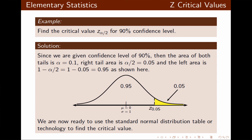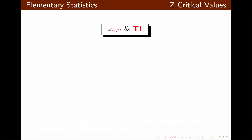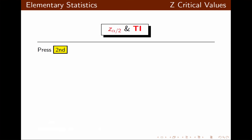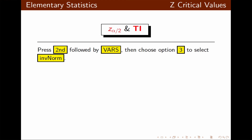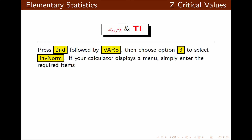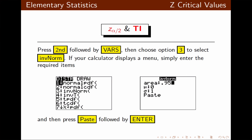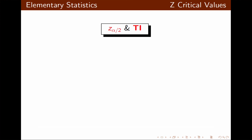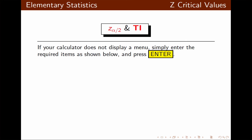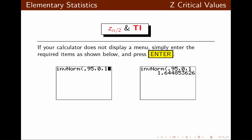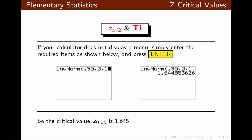Again, we can use a table or technology to find this critical value. Using the TI calculator, press 2nd, followed by VARS, and choose option 3 for inverse norm. If you have a menu, enter the values and press paste followed by enter. If you do not have the menu, enter the left area, mean, and standard deviation separated by commas, then press enter. The critical value z of 0.05 is 1.645.